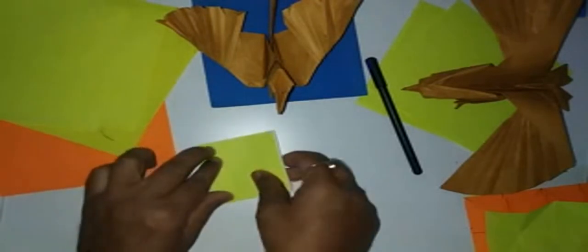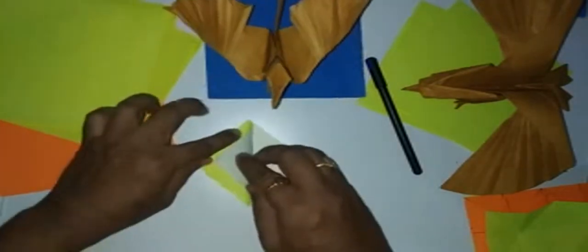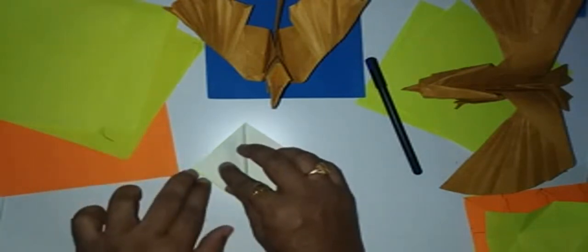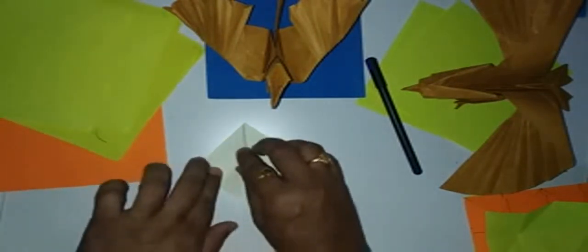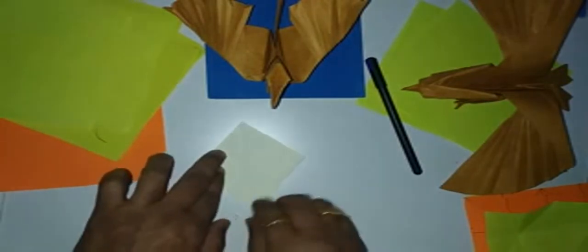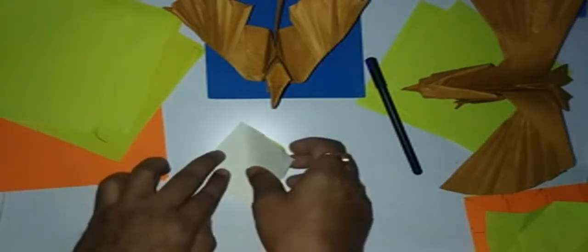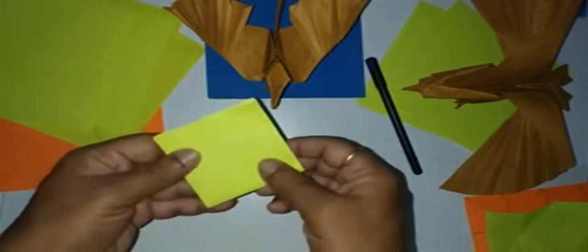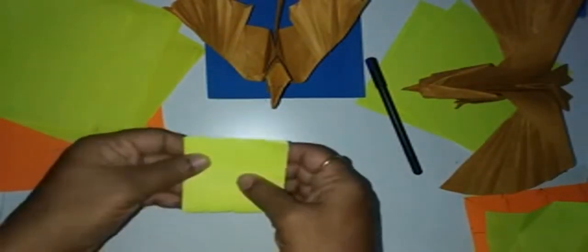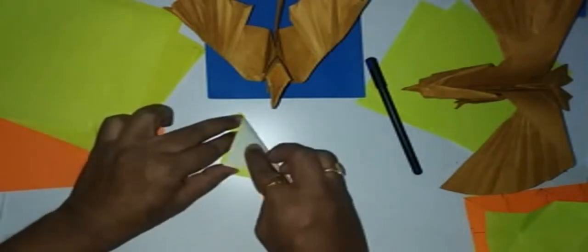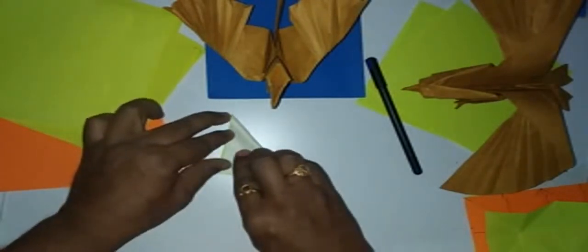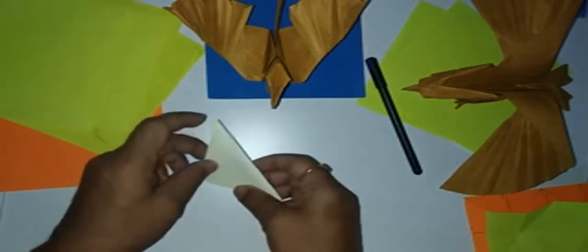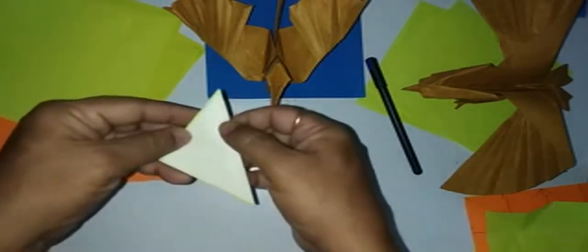Now fold only the top flap forming a diagonal to the square. Reverse the fold. Fold the remaining three flaps forming a diagonal again.